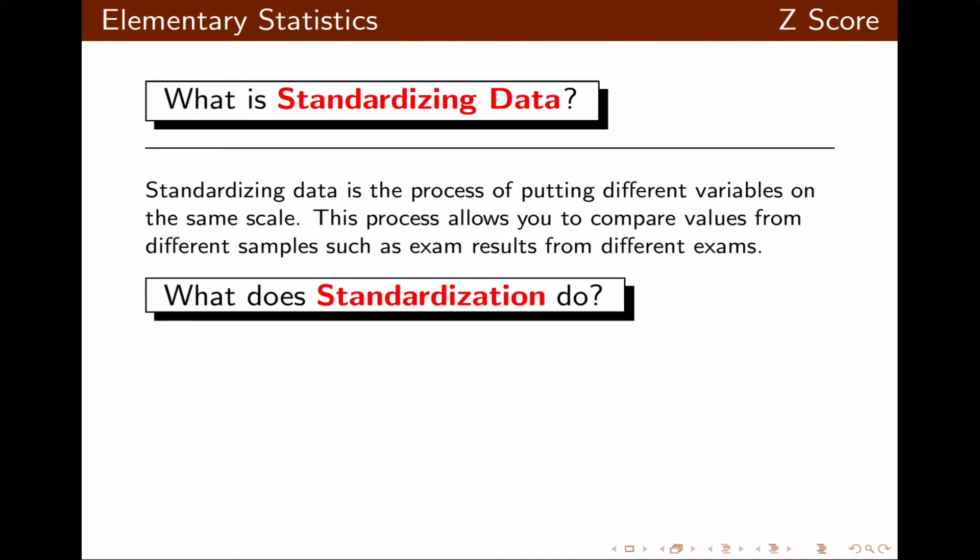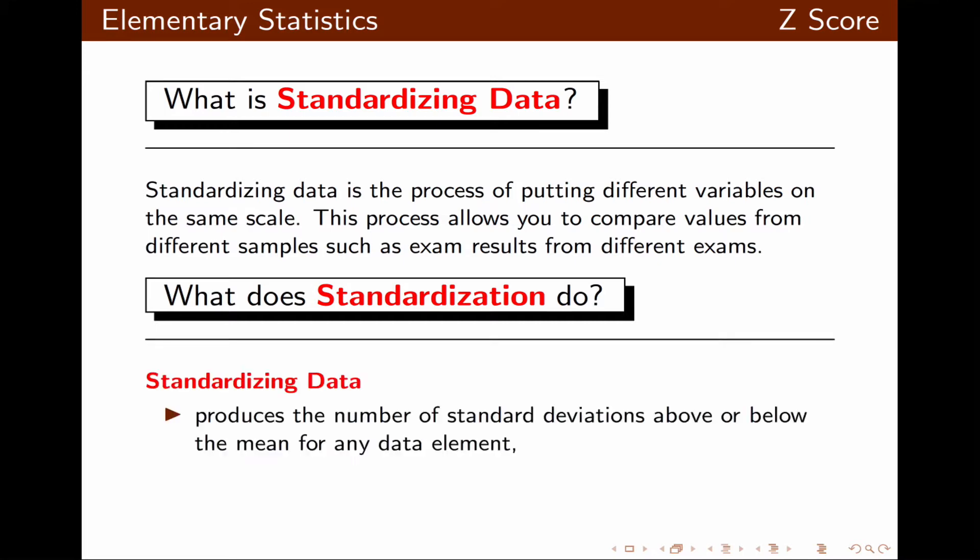What does standardization do? Standardizing data produces the number of standard deviations above or below the mean for any data element. It also identifies the usual or unusual data element in the process.